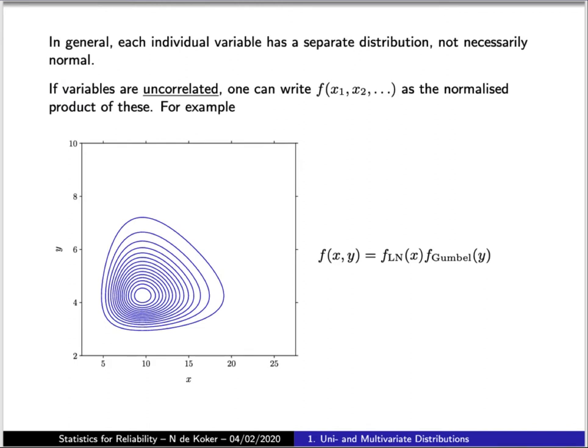Now more generally we're going to have the case where our variables are not normally distributed, which is to say we want to describe a multivariate distribution where the marginal distributions of each of the individual variables is not normal. So for example, in this case, we have x log normally distributed and y Gumbel distributed.